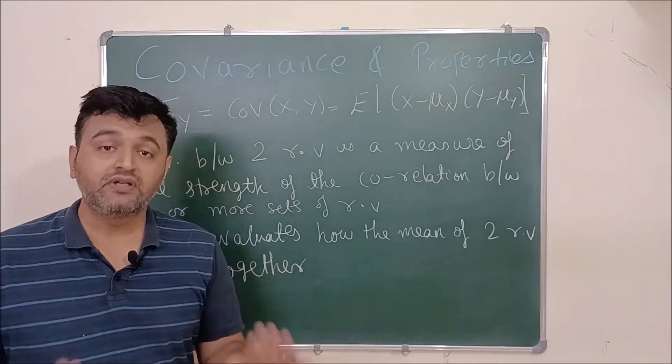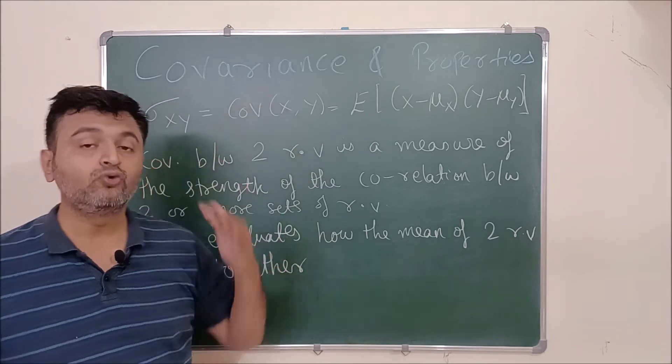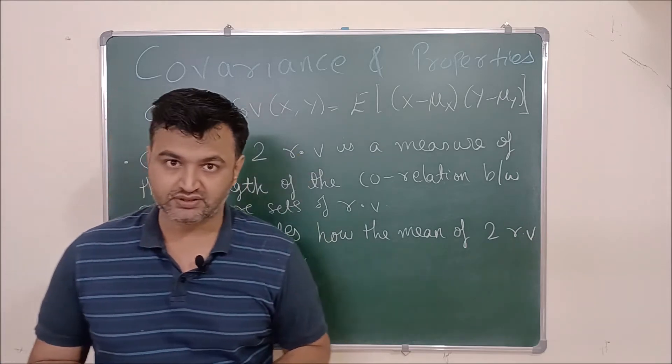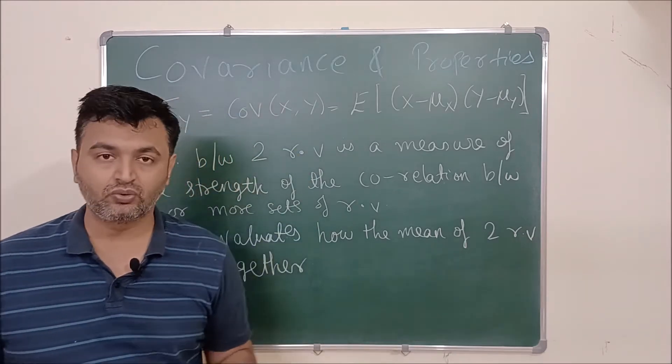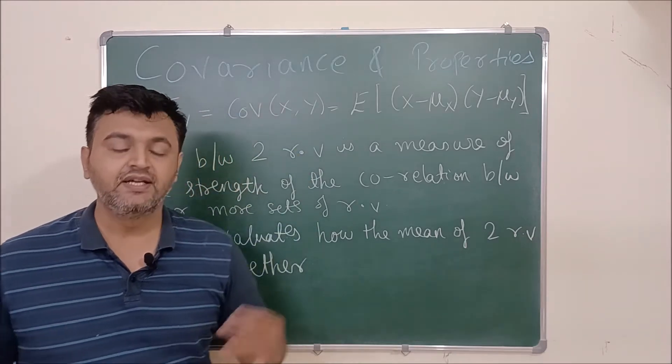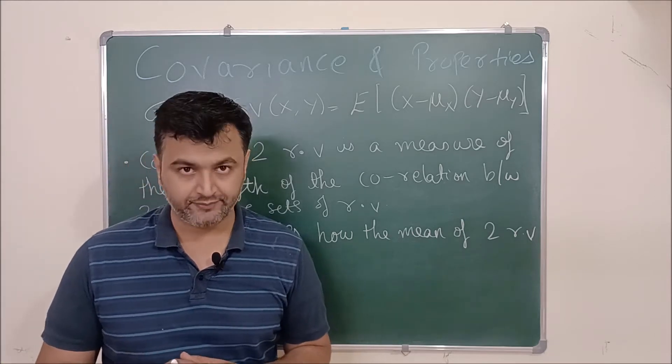But when you have more than one random variable, then we have covariance in the picture. So suppose X and Y are two random variables, then you find covariance of X and Y.